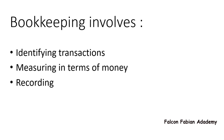Once the transactions have been identified and measured in terms of money, they are recorded in the books of prime entry, or in the journal, in chronological order. So after recording in the journal, the data is then classified — data of similar nature is sorted and recorded in the ledger.